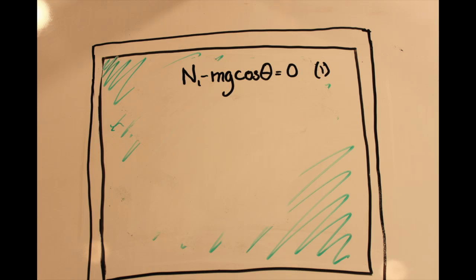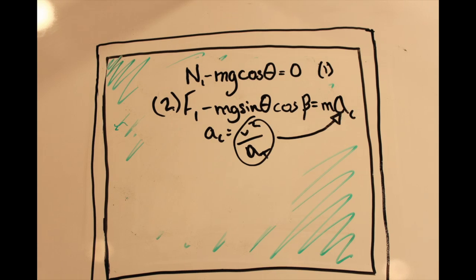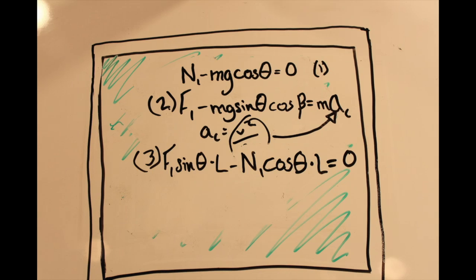We can also infer that because the snowboard is hypothetically not slipping, then F1 minus mass by gravity by sine of theta by cosine of theta equals mass by centripetal acceleration. Centripetal acceleration is velocity squared divided by the radius of the turn. We can approximate G to be in rotational equilibrium for the sake of mathematics. This may be written as F1 sine of theta by L minus N1 cosine of theta by L equals zero. This is equation 3.